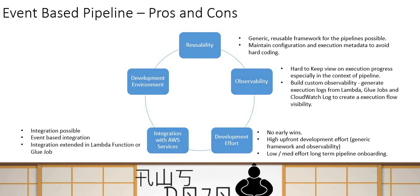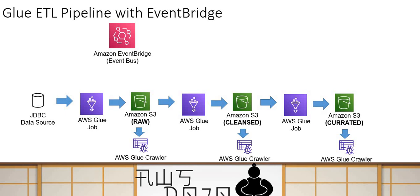From a development effort standpoint, there is no early win because you must first build the reusable framework. The upfront development cost is high, but once the framework is built, you simply create Glue jobs and crawlers, configure your execution metadata in DynamoDB, and the orchestration runs automatically. You don't need to create a separate workflow per pipeline like you do with Step Functions or Glue Workflow. Integration with AWS services is also possible via event-based Lambda calls.